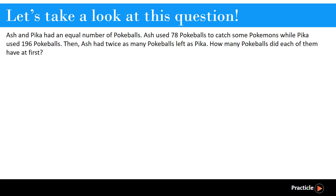Ash and Pika had an equal number of pokeballs at the start. Ash then used 78 pokeballs to catch some pokemons, while Pika used 196 pokeballs. After this, Ash had twice as many pokeballs left as Pika. How many pokeballs did each of them have at first?